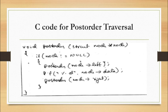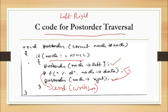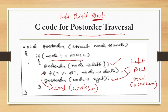For post-order traversal, if node is not equal to null, we go to the left first, then go to the right, and printf node->data comes at the end — root is visited last. So the order is: call post_order on the left, call post_order on the right, then printf node->data for the root. Whenever the root comes, we print at the end. That is the C code for post-order traversal.